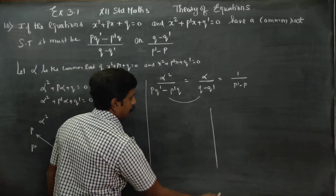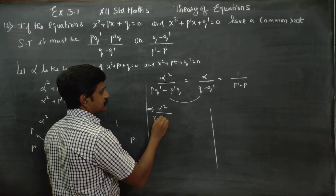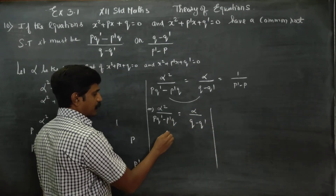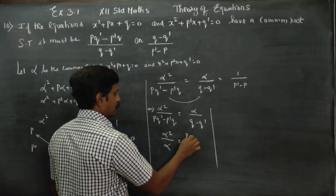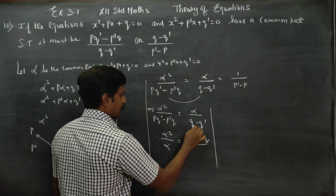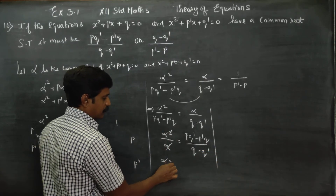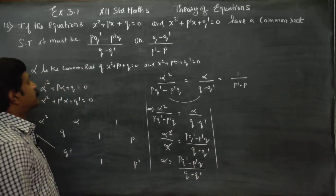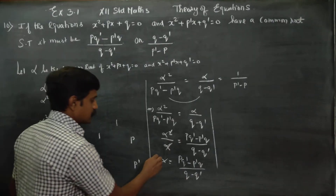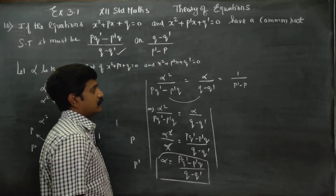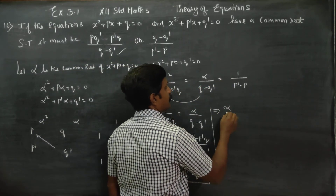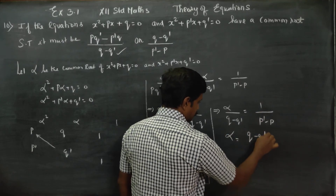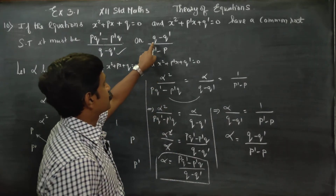From the first pair: alpha squared divided by (p·q-dash minus p-dash·q) equals alpha divided by (q minus q-dash). Cross multiplying gives alpha equals (q minus q-dash) divided by (p-dash·q... first answer is ready. Second answer: alpha divided by (q minus q-dash) equals 1 divided by (p-dash minus p), so alpha equals (q minus q-dash) divided by (p-dash minus p).